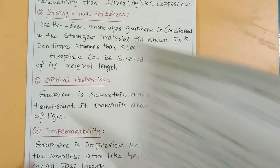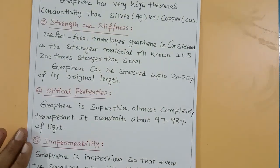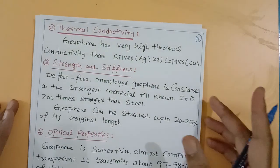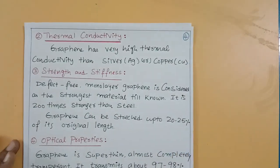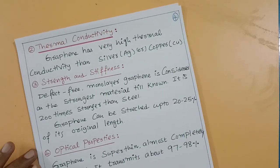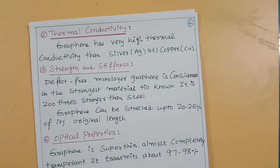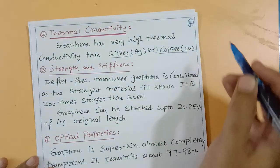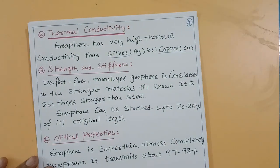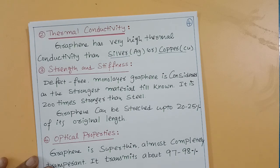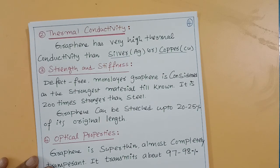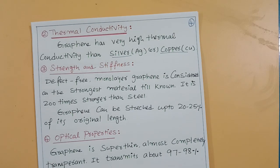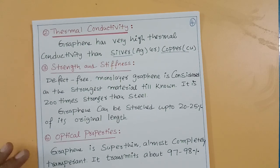Second property: thermal conductivity. Graphene has very high thermal conductivity — higher than silver or copper. Compared to metals like silver and copper, graphene can conduct heat in all directions much more effectively.